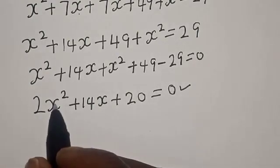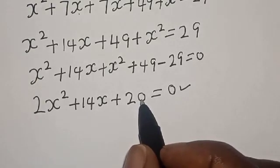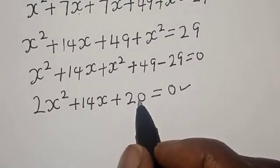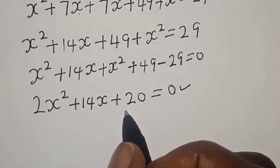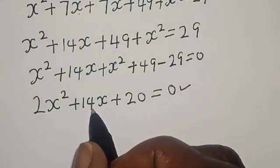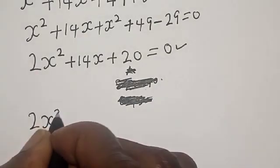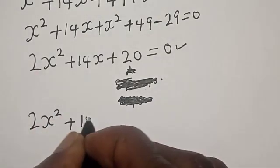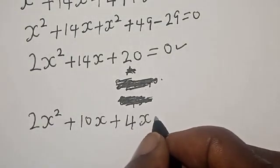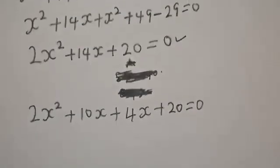The coefficient of x squared is 2, the coefficient of x is 14, and the constant is 20. If you multiply 2 by 20, you get 40. You look for two numbers whose product is 40 and whose sum is 14. So we have: 2x squared plus 10x plus 4x plus 20 is equal to 0.